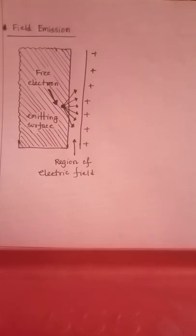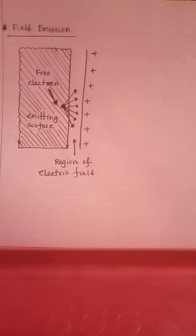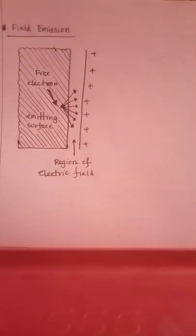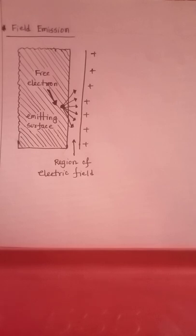Today our topic is field emission. The definition of field emission: the process of electron emission by the application of a strong electric field at the surface of metal is known as field emission. When a metal surface is placed close to a high voltage conductor which is positive near the metal surface, the electric field extracts an attractive force on the free electrons in the metal.